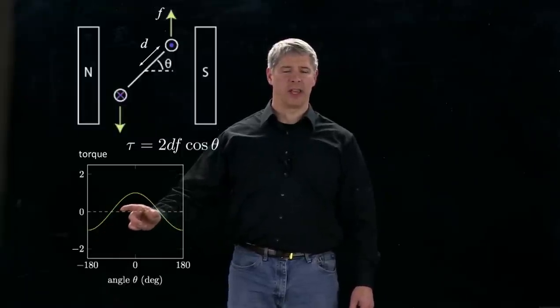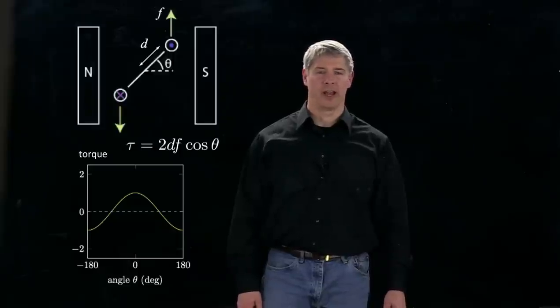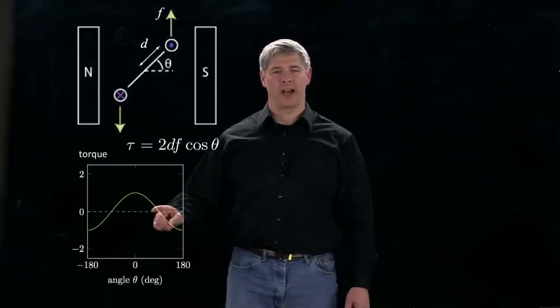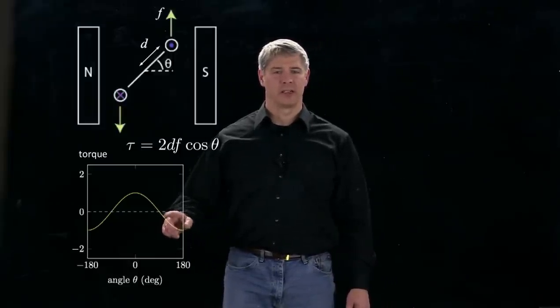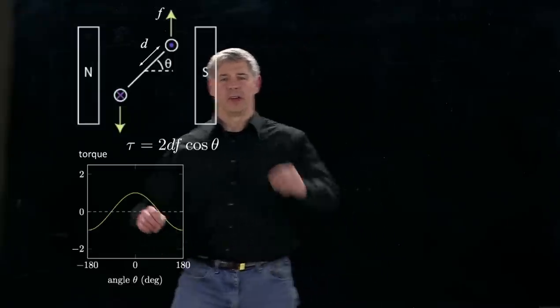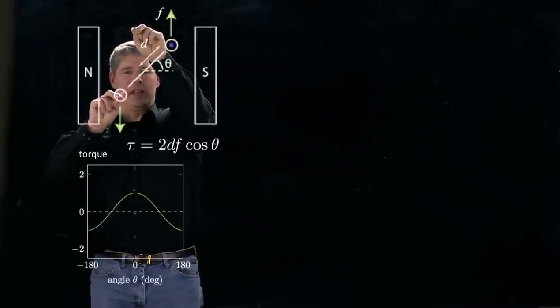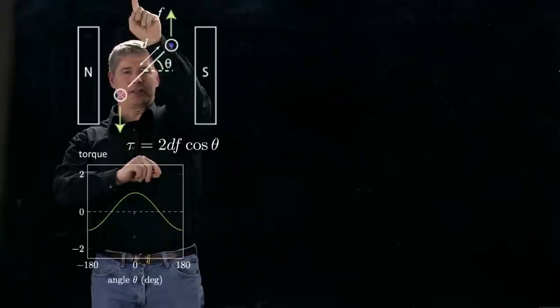We get a positive torque in the angle range minus 90 to 90 and a negative torque at all other angles. We can see here at 90 degrees that we have zero torque, and in fact that's where this top conductor is vertical above the center point.